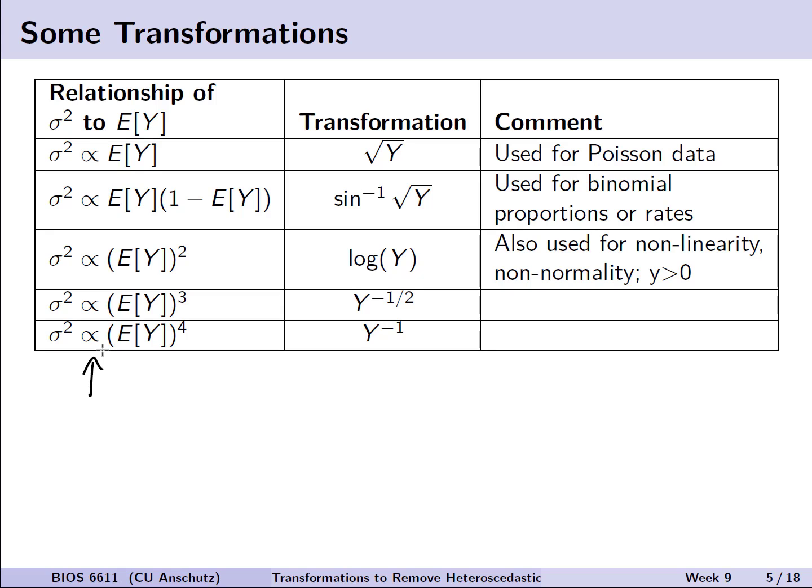Or maybe our variance is proportional to something like the mean times 1 minus the mean, something that kind of looks like a binomial proportion variance. In this case, we can take an inverse sine of the square root of y as a transformation. Another common one is if the variance is proportional to the mean squared, where we can take the natural log as our transformation, which can also be used for non-linearity or non-normality issues. One of the catches is that your outcome y must be greater than zero because we can't take the log of a negative value.